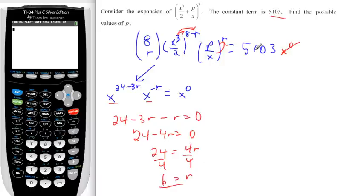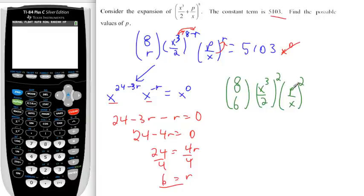So that gives us 8 choose 6, x to the 3 over 2 to the power of 8 minus 6, which is 2. p over x to the power of 6. Of course, r is 6, those things need to match up. And this is going to equal 5103.